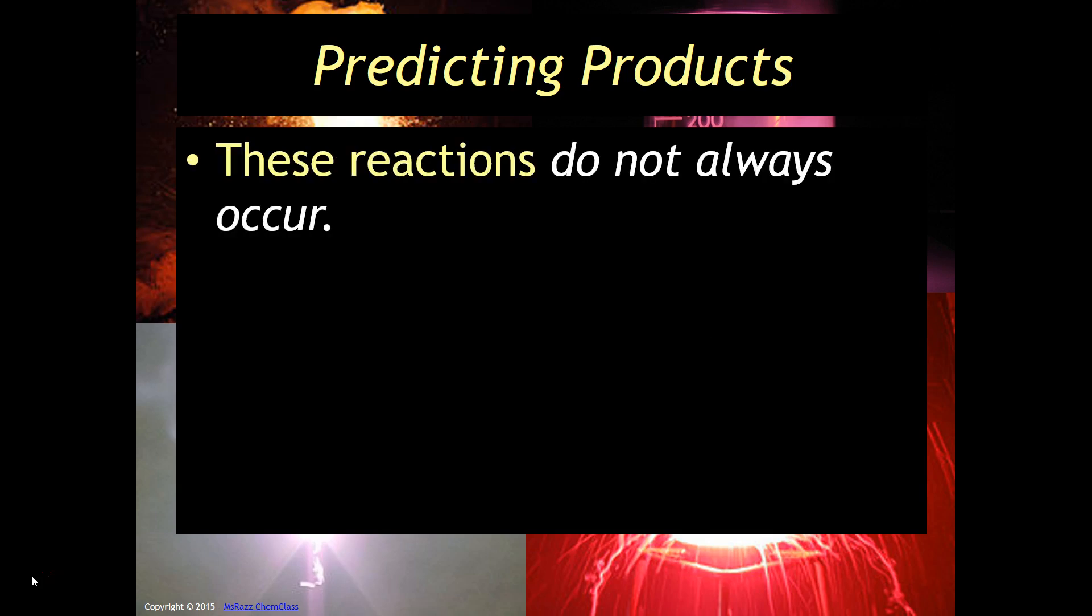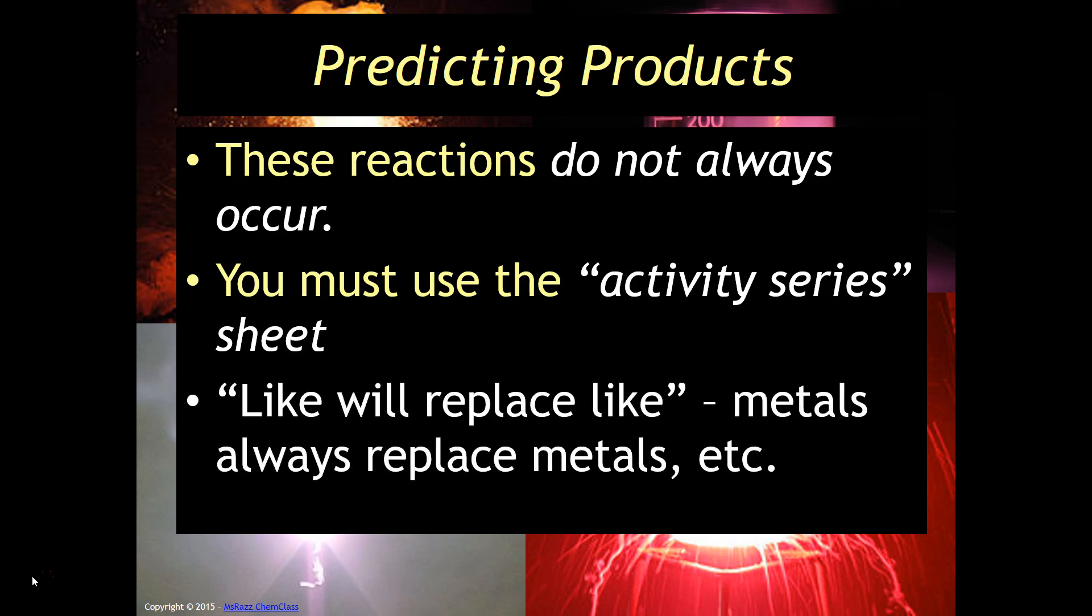The thing about these reactions, though, is that they actually do not always occur. So we're going to have to use a new reference sheet called the reactivity series or activity series sheet. Another helpful rule of thumb is that like will replace like, which means that metals only have the capacity to replace other metals and non-metals can only replace other non-metals.